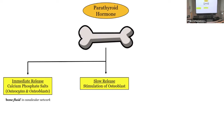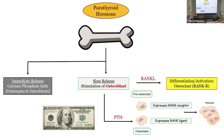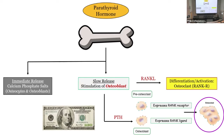The whole separate curriculum is what does parathyroid hormone do on bone — that's what they care about. It's the slow release: stimulation of the osteoblast. Parathyroid hormone stimulates the osteoblast, which expresses RANK ligand. The pre-osteoclast has the RANK receptor and the two interact, resulting in differentiation and activation of the osteoclast. So PTH stimulates the osteoblast with a secondary effect on the osteoclast.